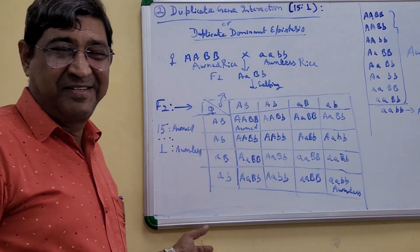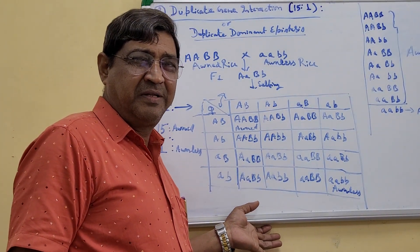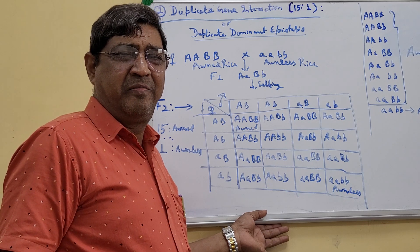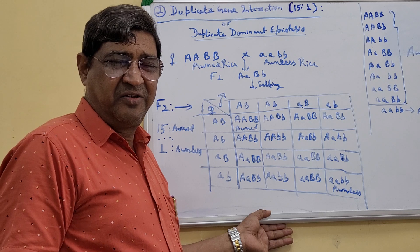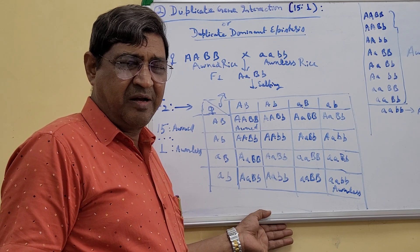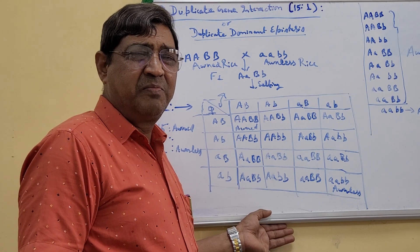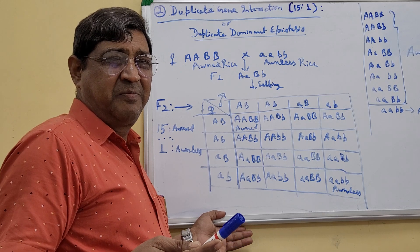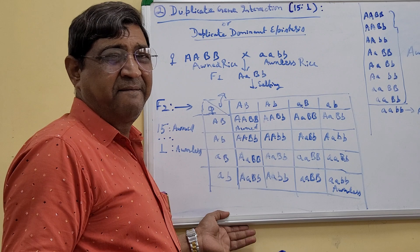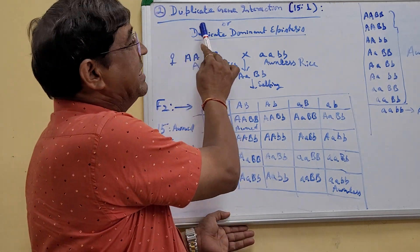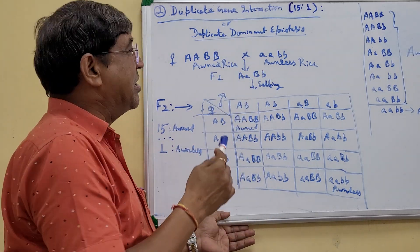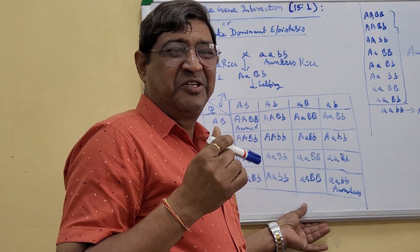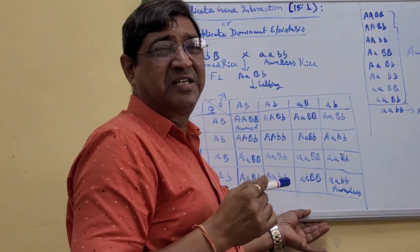Welcome, dear students. As you know, I am nowadays dealing with epistatic interactions — many types of interactions. I am putting different types with examples. Now I am going to deal with the second type of epistatic interaction or internal allelic interaction. This is named as duplicate gene interaction, also called duplicate dominant epistasis, or simply duplicate gene action.